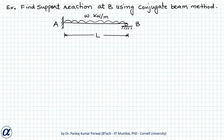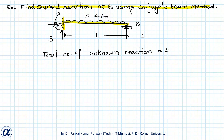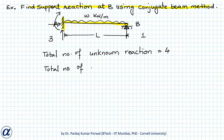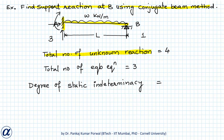For example, if I want to find the support reaction at B using conjugate beam method in this structure, note that at A we have a fixed support, so the number of unknowns at A will be 3: horizontal reaction, vertical reaction, and moment. The number of unknowns at B will be 1, that is vertical reaction at B. So total number of unknown reactions is 4, and since we can only draw one free body diagram for the beam, total equilibrium equations is 3. Therefore, degree of static indeterminacy equals 4 minus 3, which equals 1. So our propped cantilever beam is statically indeterminate with indeterminacy 1.